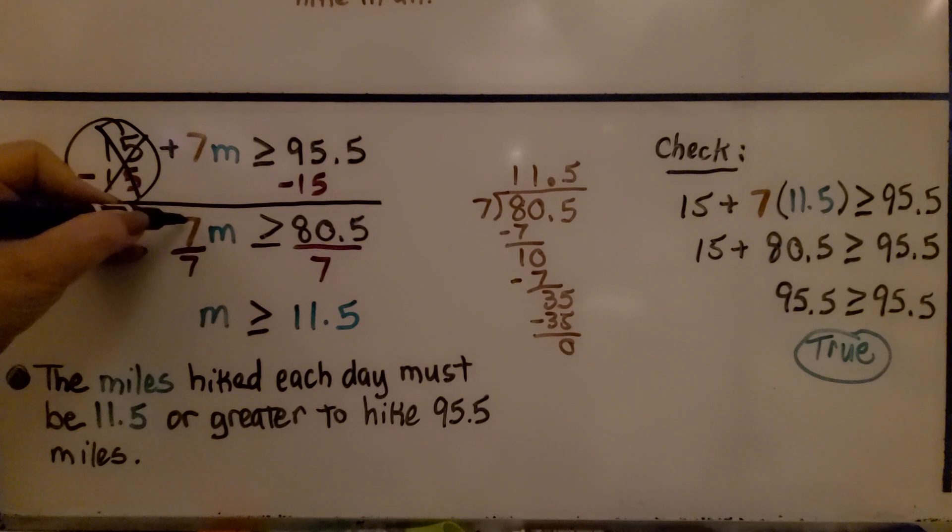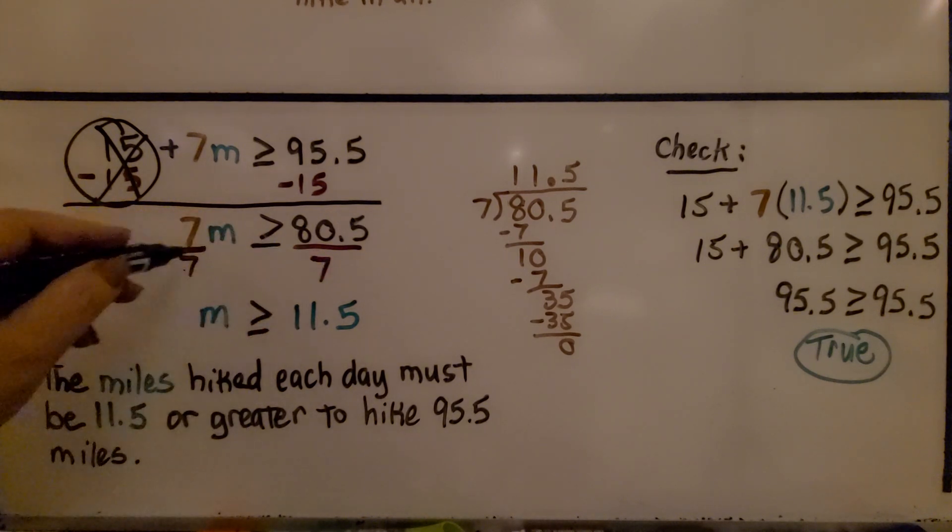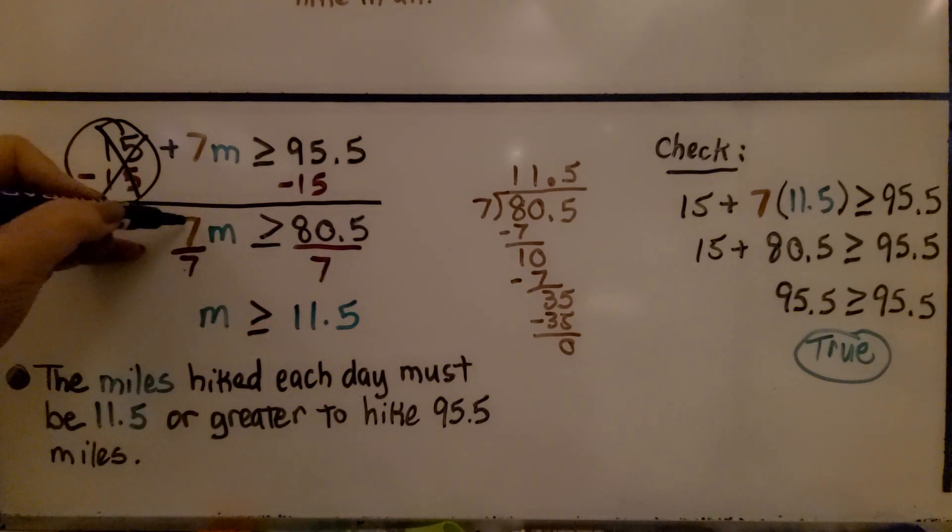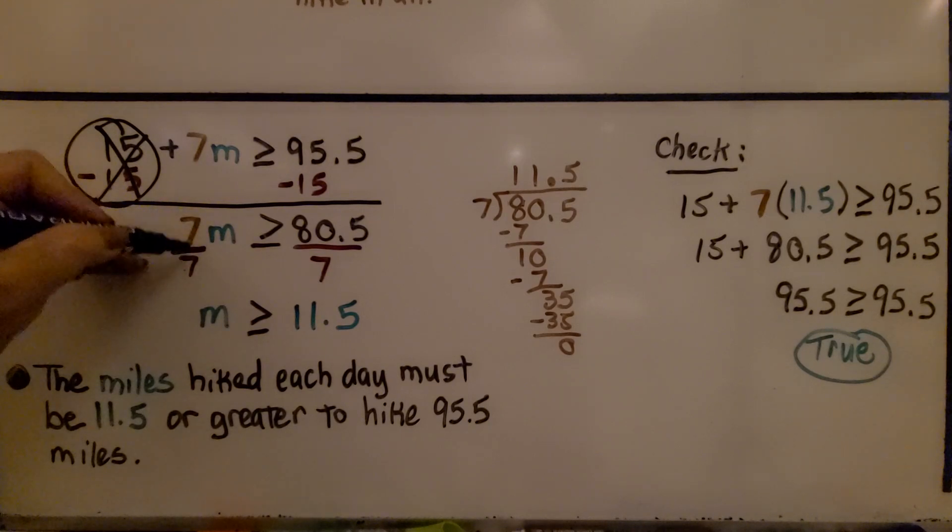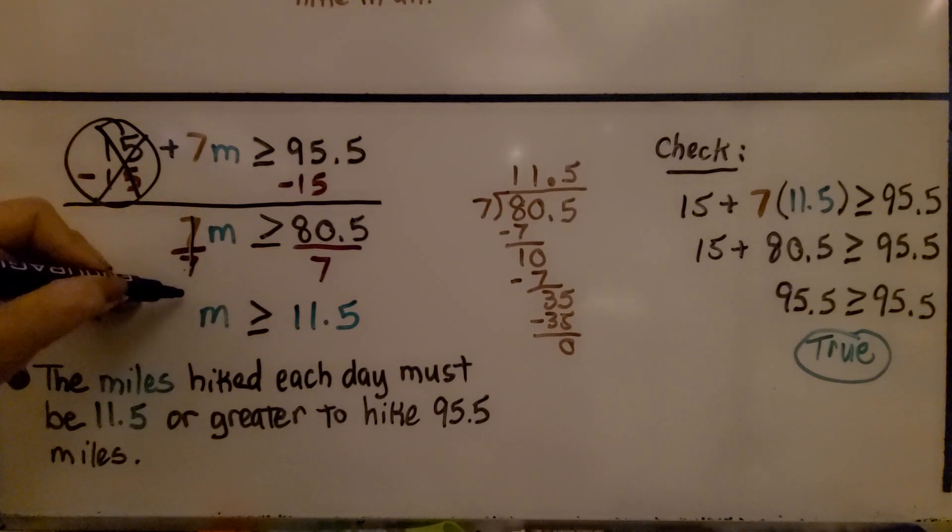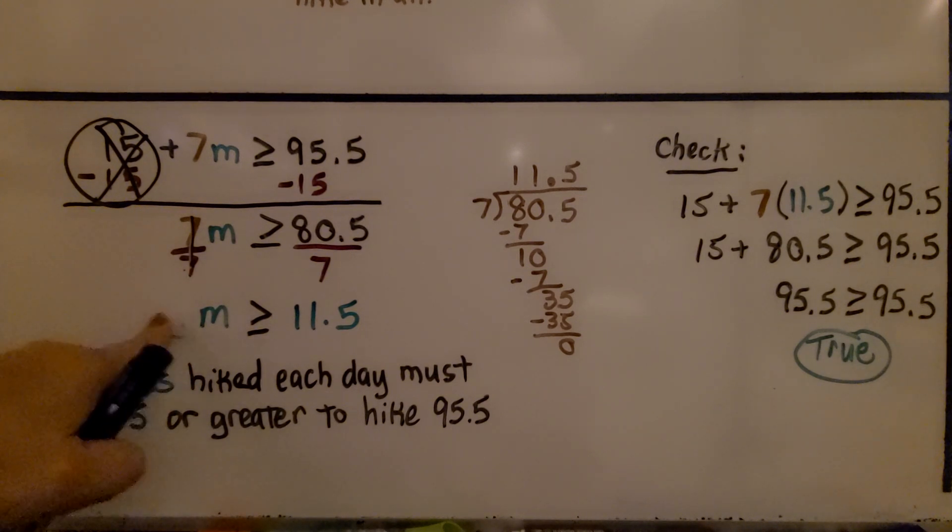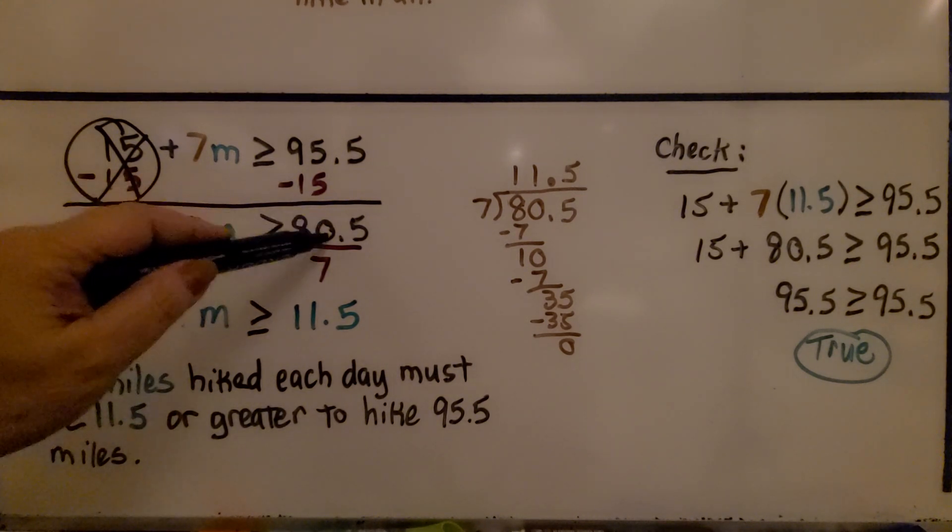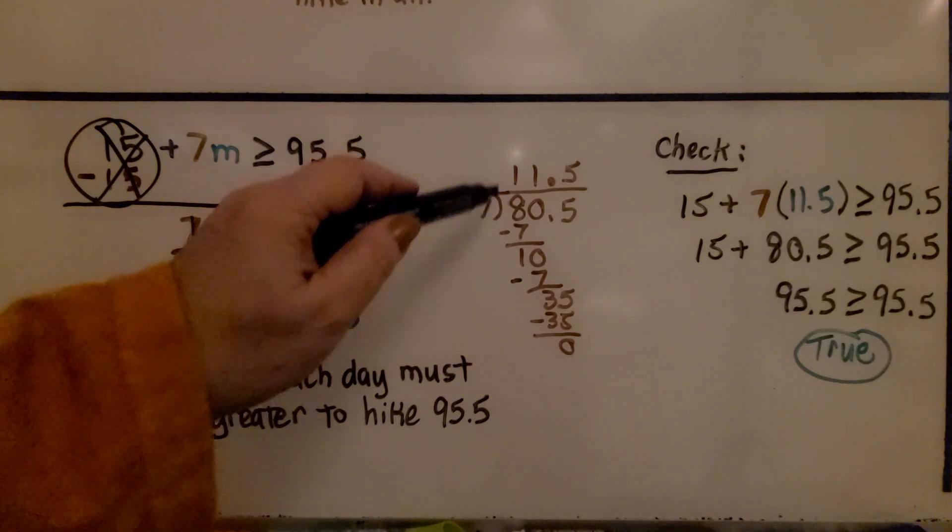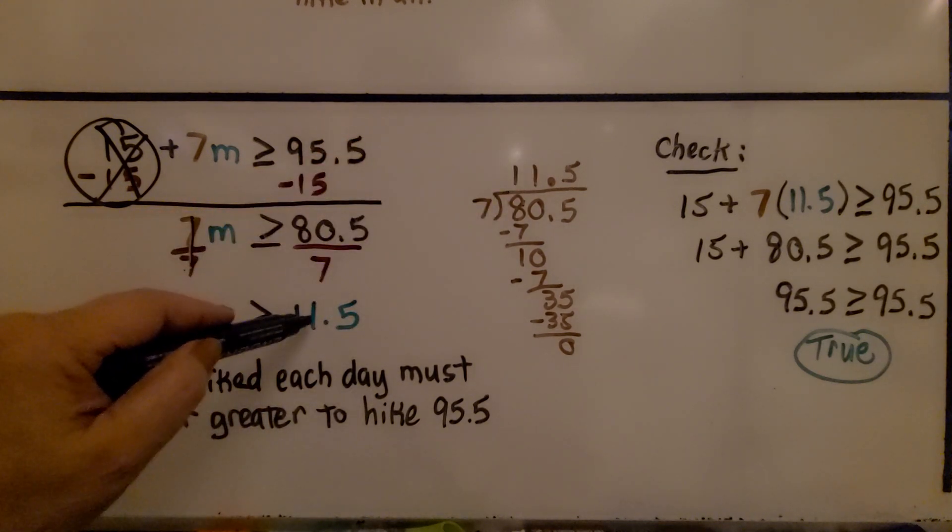Now, because our coefficient is a seven, we divide both sides by seven. Seven over seven, that's the same numerator and denominator, so that makes one M. So we have one M here, but we don't need to write that one, do we? On this side, we do 80 and 5 tenths divided by seven. That comes out to 11 and 5 tenths.